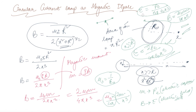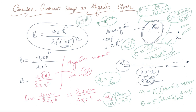We had already proved that an electric dipole with two charges behaves as a dipole under an electric field. Similarly, by comparing the magnetic field expression with the electric dipole case, we can prove that a circular current loop at a greater distance — where X is much greater than R — also behaves as a magnetic dipole.